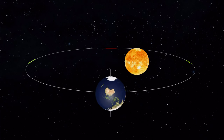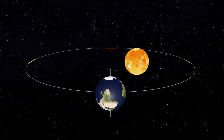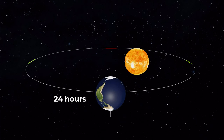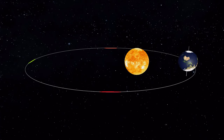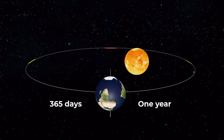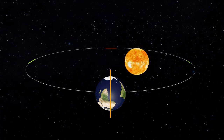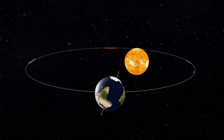The Earth rotates on an imaginary line called the axis, which runs through the North and South poles. This rotation takes 24 hours to complete, which we call one day. The Earth also orbits around the Sun, and this orbit takes 365 days, which we call one year. Earth is tilted on its axis at an angle of 23.5 degrees, and this tilt is what causes the changing of seasons.